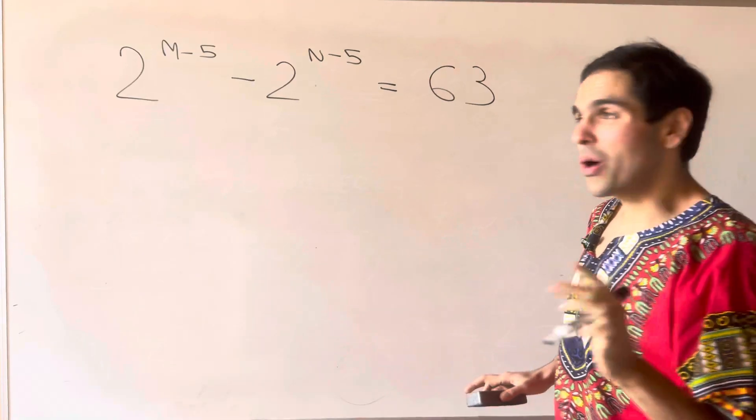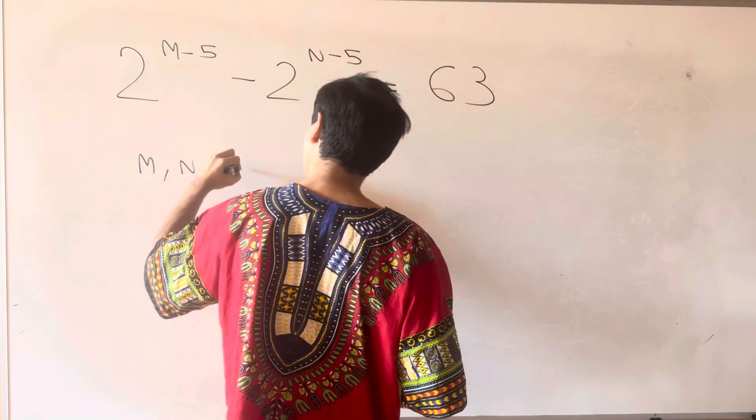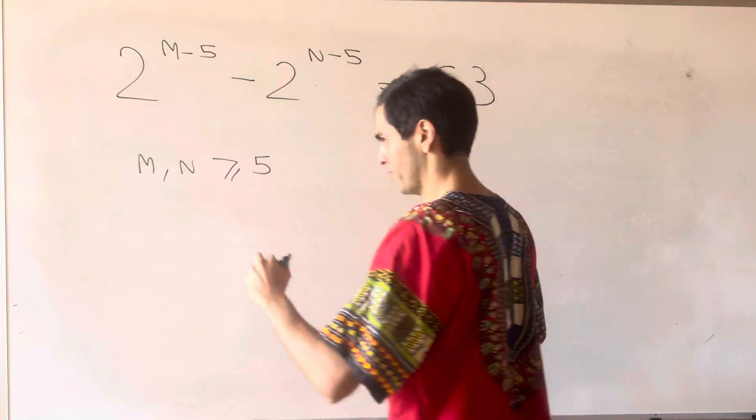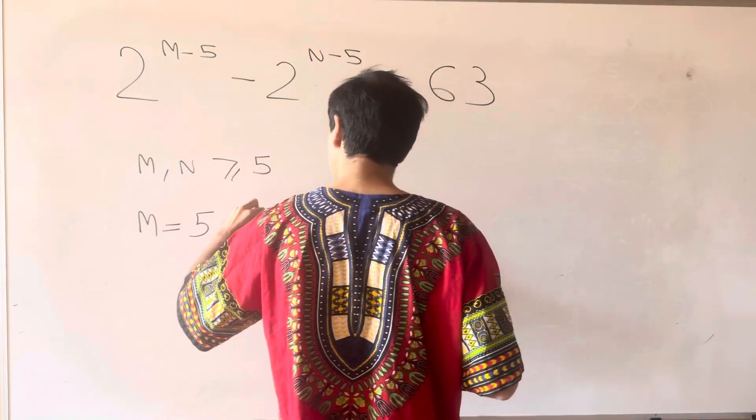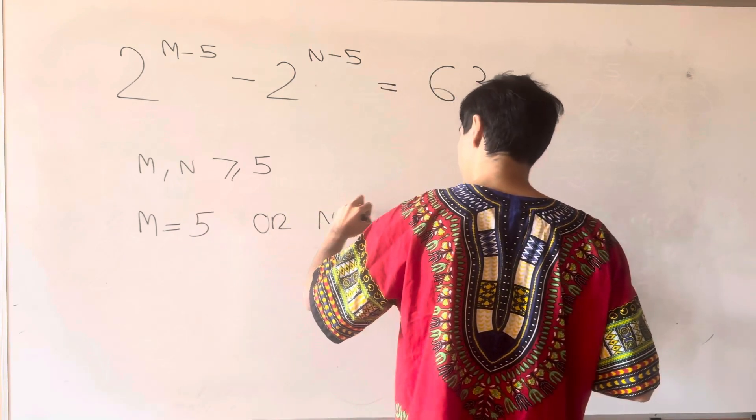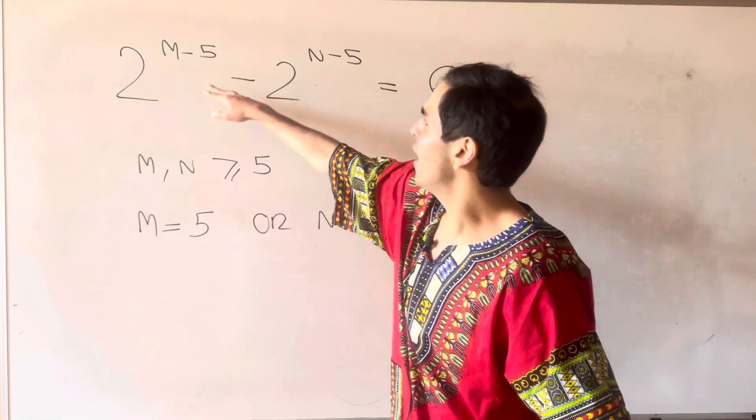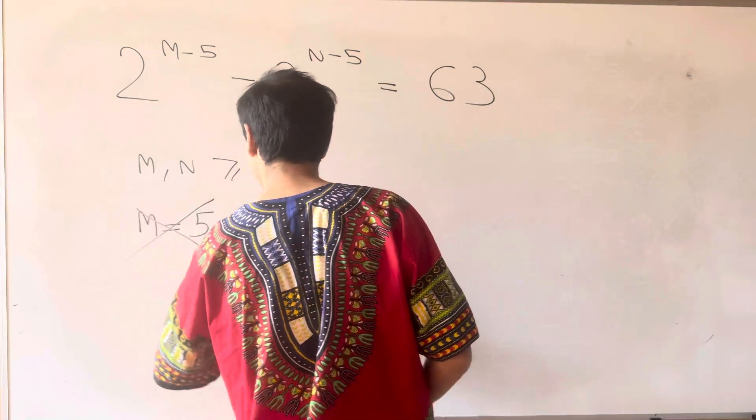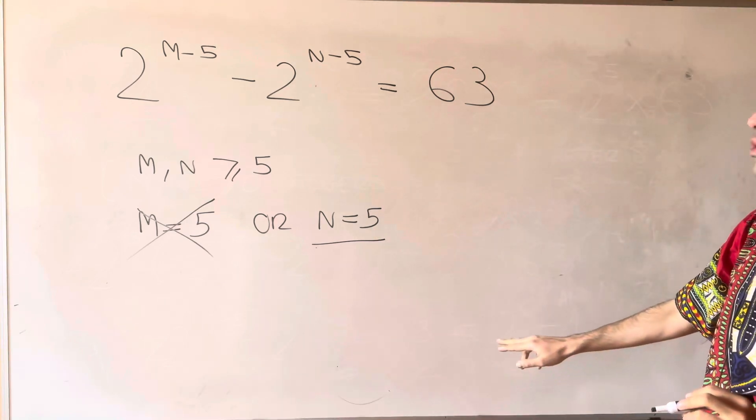Just to summarize what I said: first of all, m and n have to be greater or equal to 5, otherwise we get decimals. And moreover, because of the parity, either m is 5 or n is 5. But if m is 5, we get something likely negative, so that doesn't work. And so in particular, we do get that n equals 5.